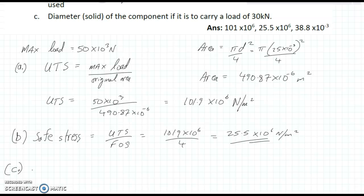In part C, we're looking for the diameter of the component if it is to carry a load of 30 kilonewtons. So, sigma equals F divided by A. And, sigma is going to be the stress. We're looking for the diameter. So, first we'll get the area and then we'll worry about the diameter. So, from here we can swap the two of these guys and we end up with area equals force over sigma. Now, sigma here is going to be the stress, the safe stress. And, force is the load. And, they're telling us the load to be carried is 30 kilonewtons. So, this is going to be equal to 30 by 10 to the 3 divided by 25.5 by 10 to the 6.